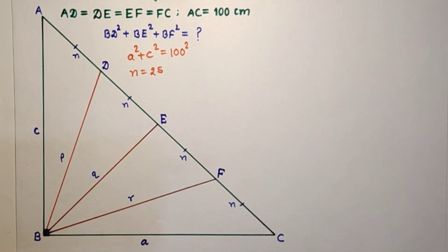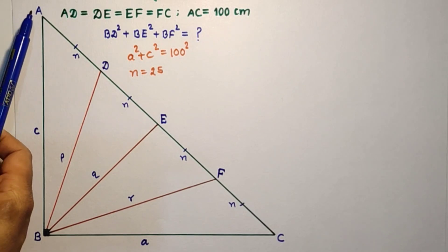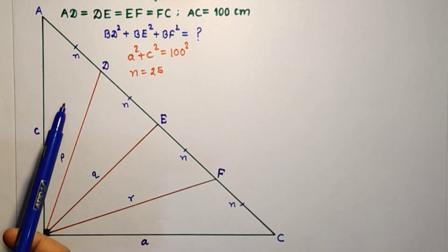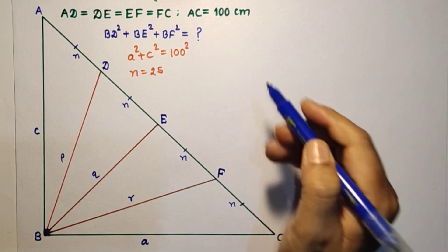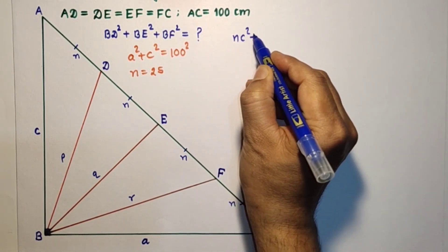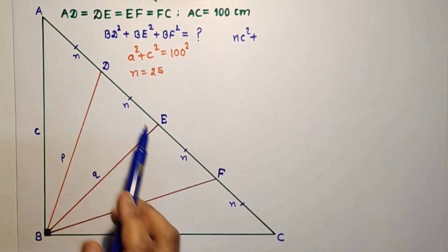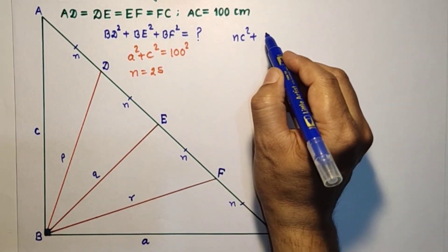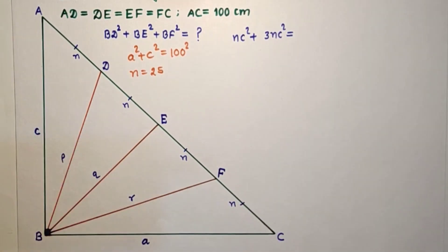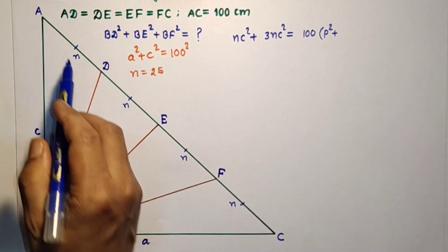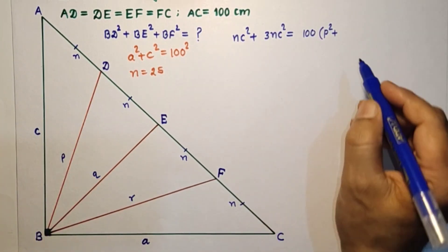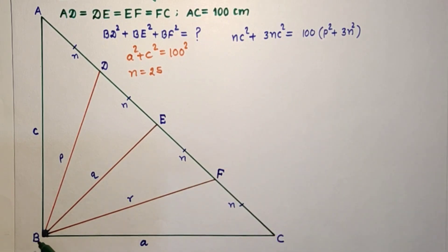Using Stewart's theorem in triangle ABC with segment BD: the left side is N·a² + 3N·c² and the right side equals 100 times P² plus the product of the two parts of AC, which are N and 3N, giving 3N².